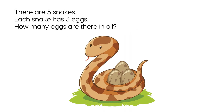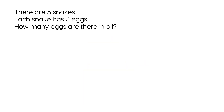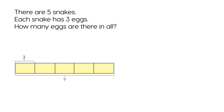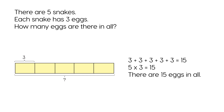There are five snakes. Each snake has three eggs. How many eggs are there in all? 3 plus 3 plus 3 plus 3 plus 3 equals 15. 5 times 3 equals 15. There are 15 eggs in all.